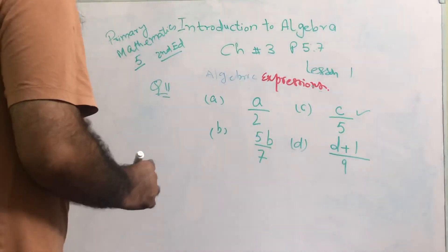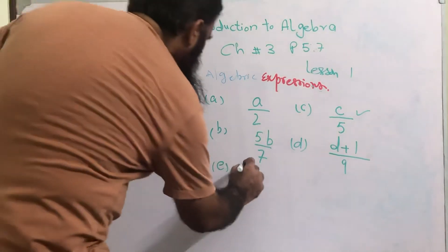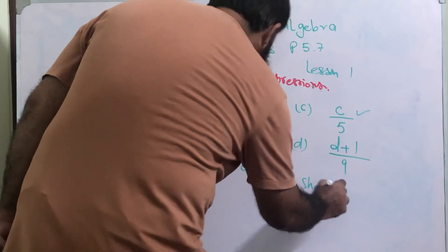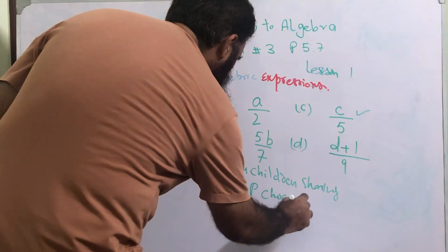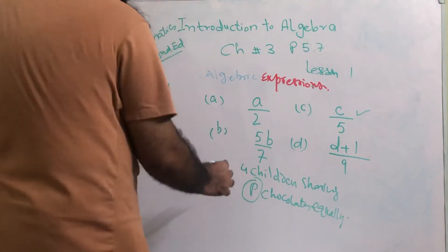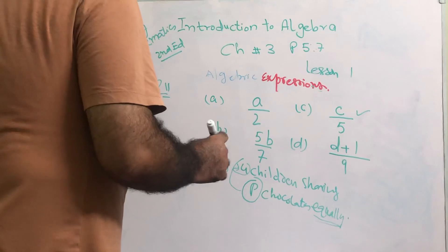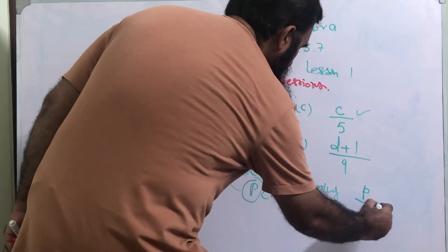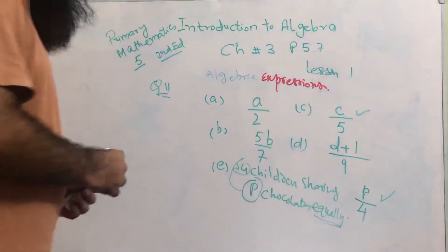Part e: four children share p chocolates equally. p number of chocolates are divided among four children because they are sharing equally. The number of chocolates is p, the number of children is four. So p over 4 is the algebraic expression for part e.